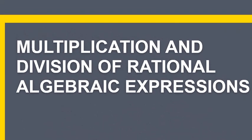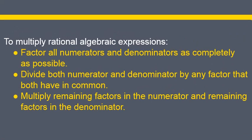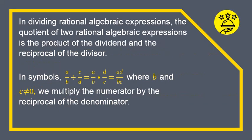Multiplication and division of rational algebraic expressions. Operations like multiplication and division are very common in fractions, and these operations can be performed on rational algebraic expressions. To obtain the product of two or more rational expressions, we get the product of the numerators as well as the product of the denominators. In symbols, a over b times c over d is equal to ac over bd, where b and d are not equal to zero, and the product is expressed in lowest terms. To multiply rational algebraic expressions: first, factor all the numerators and denominators as completely as possible. Next, divide both numerator and denominator by any common factor — you can use cancellation. And last, multiply the remaining factors in the numerator and the remaining factors in the denominator.